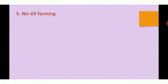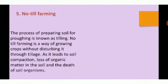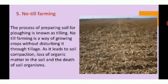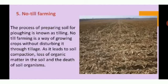The last method is no-till farming. The process of preparing soil by plowing is known as tilling. Tilling is beneficial in mixing fertilizers in the soil, making rows, and preparing the surface for sowing. However, tilling can lead to compaction of soil, loss of organic matter, and destruction of soil organisms. Thus, no-till farming is a way to prevent this harm, by growing crops without disturbing the soil through tillage.